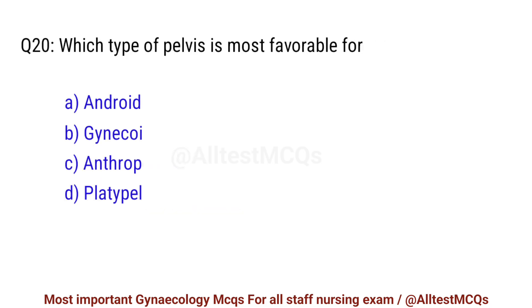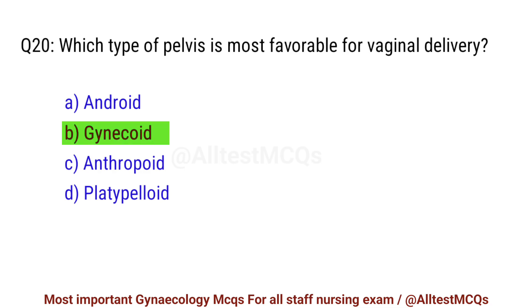Question No. 20. Which type of pelvis is most favourable for vaginal delivery? Right option is B. Gynecoid.